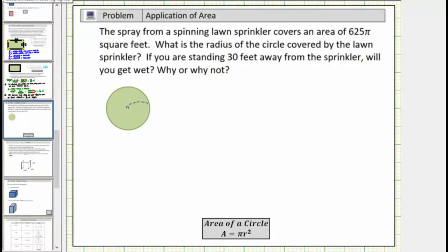We can model this situation using this circle here where the sprinkler would be at the center of the circle, and as it spins around it waters the shape of the circle. We're given the area of the circle is equal to 625π square feet. So we know that the area A equals 625π square feet.